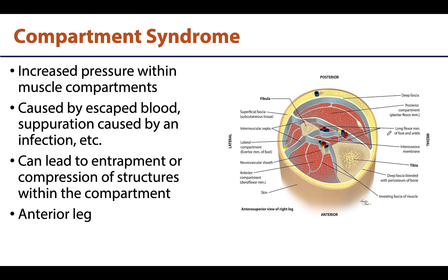If this increased pressure is not relieved, it can lead to compressive occlusion of vasculature within the compartment, as well as potential damage to the nerves and muscles due to decreased blood flow to those regions. This is referred to as compartment syndrome, which can occur in any muscle or fascial compartment but is most common in the anterior compartment of the leg.